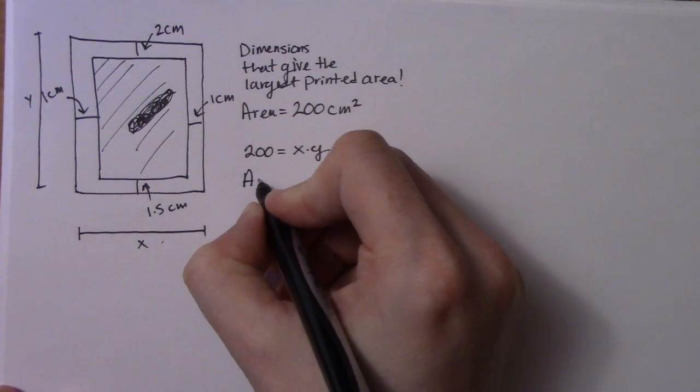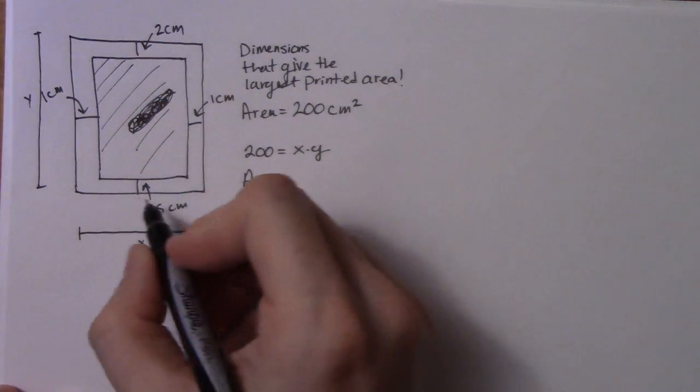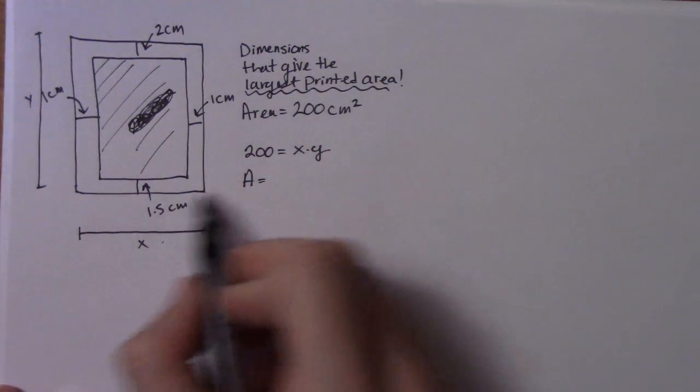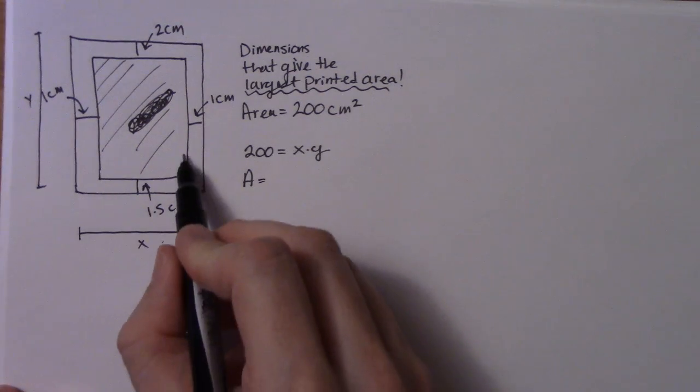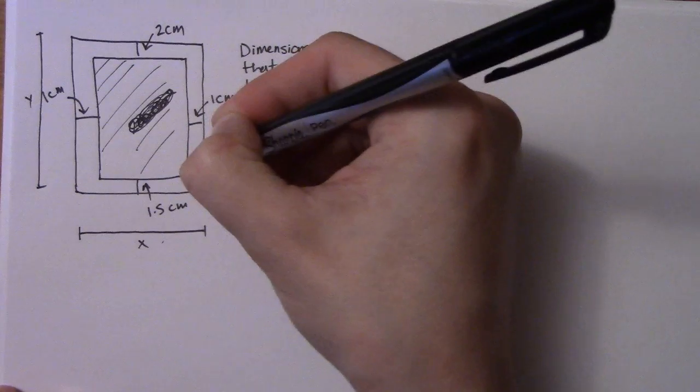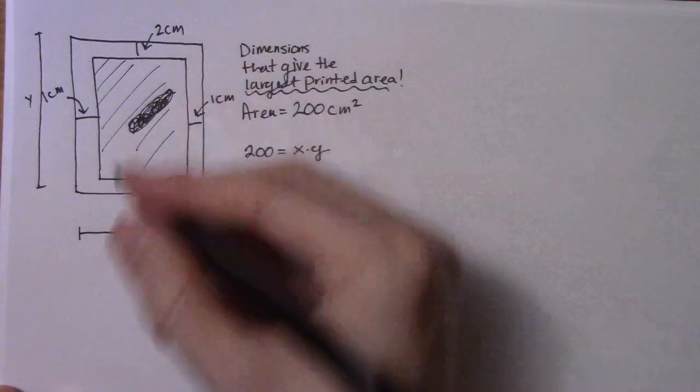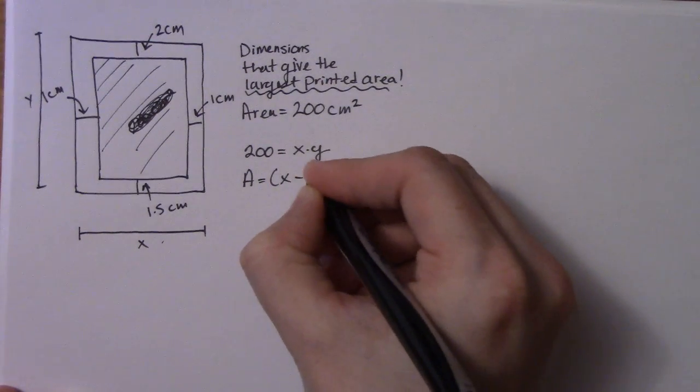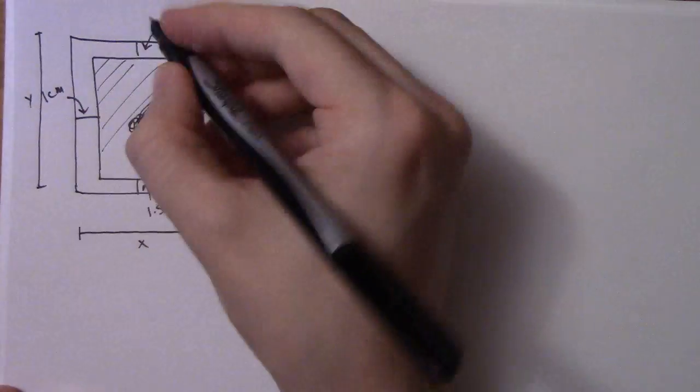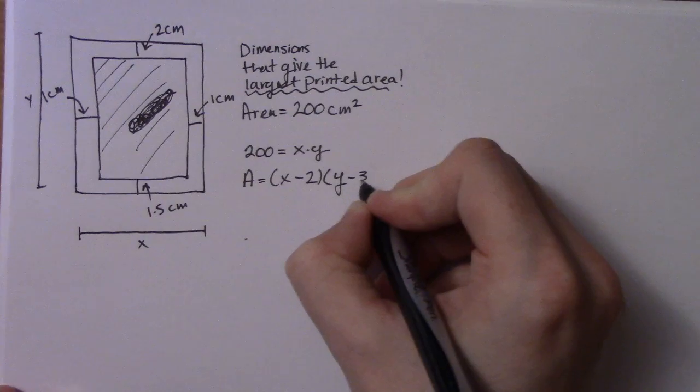So now the inner area is the next thing we're going to look for. This inner area is going to be my main formula because this is what I want, the large printed area. So that area is equal to, if I look at this I need this dimension and this dimension. So I know this entire dimension is x, but then I can subtract each one of those. So x minus 2, so 1 on each side. And then I have y subtract 2 subtract 1.5, so y subtract 3.5.